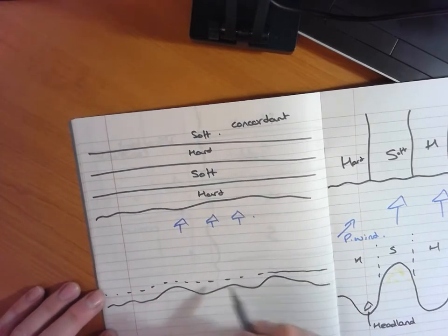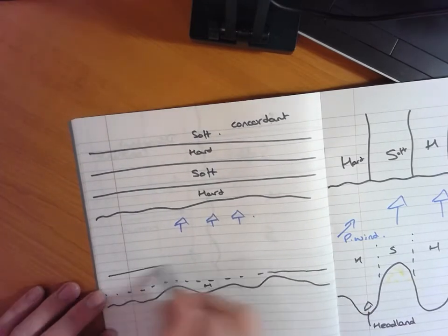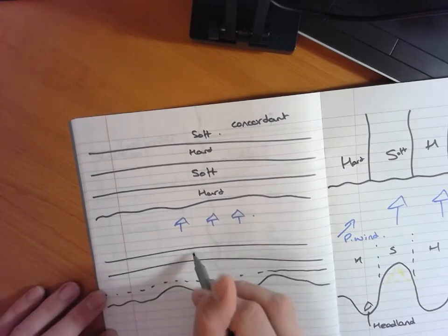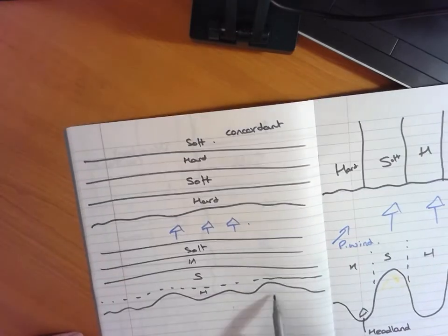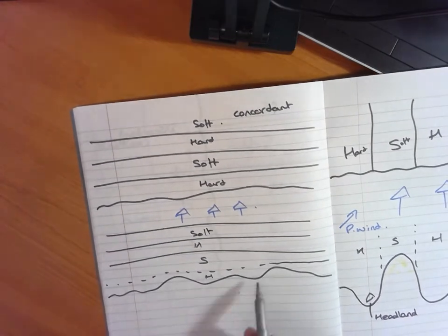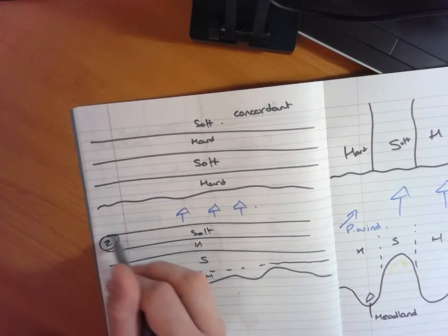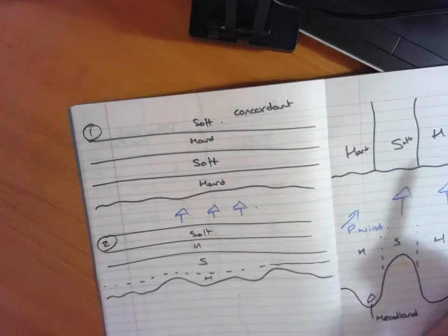So there's my hard rock after a significant period of time. There's my soft. There's my hard. And there's my soft again. And you don't see the same significant features in my second diagram as you would in on a discordant coastline.